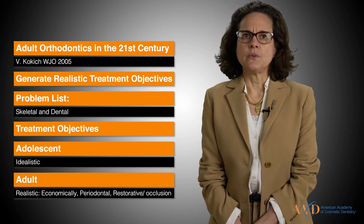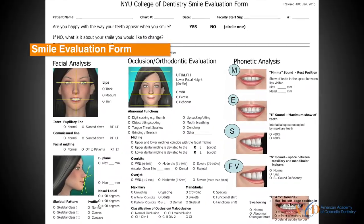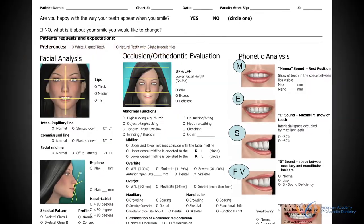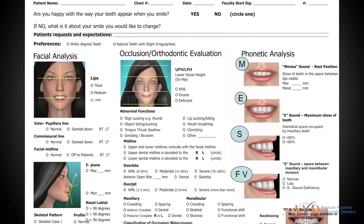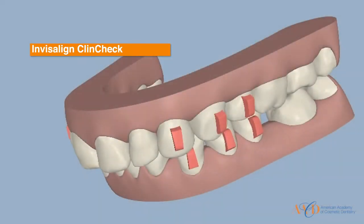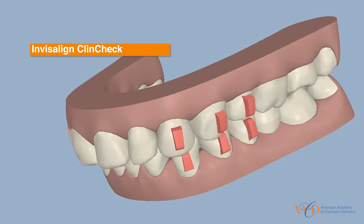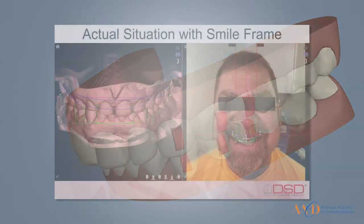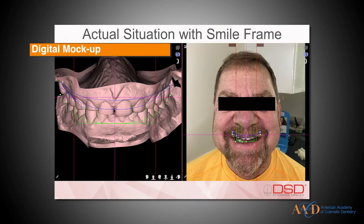The other guideline is to create a vision. One tool is the SMILE evaluation form that Dr. Calamia will explain in more detail with the different specialties and their interaction. Another is the diagnostic wax-up and the Invisalign ClinCheck, which is a great tool for the patient to have a good vision of the treatment before starting the restorative work. And finally, the digital mock-up.